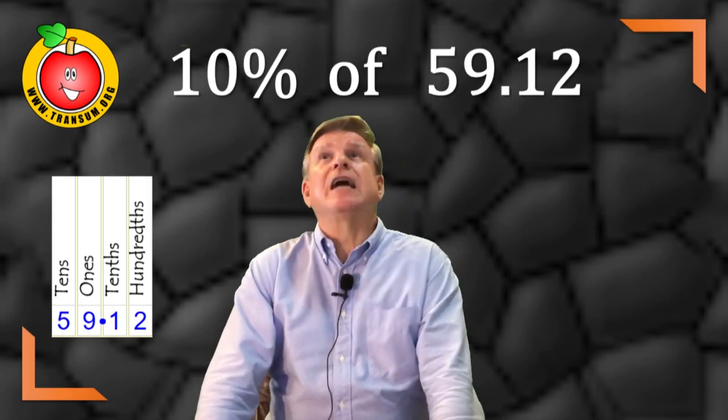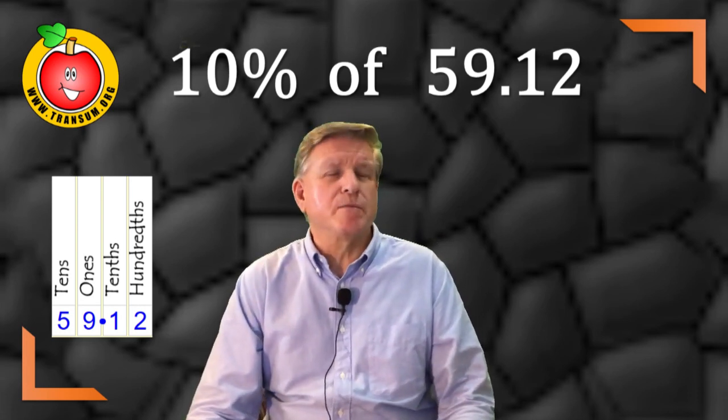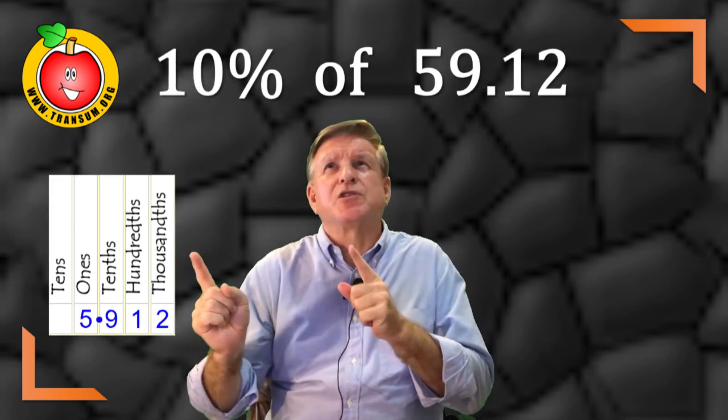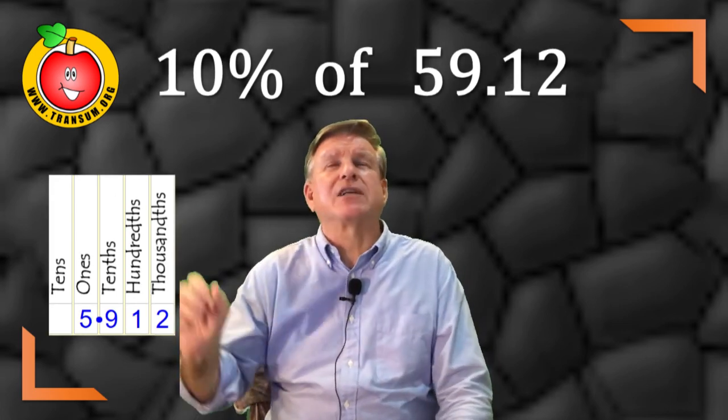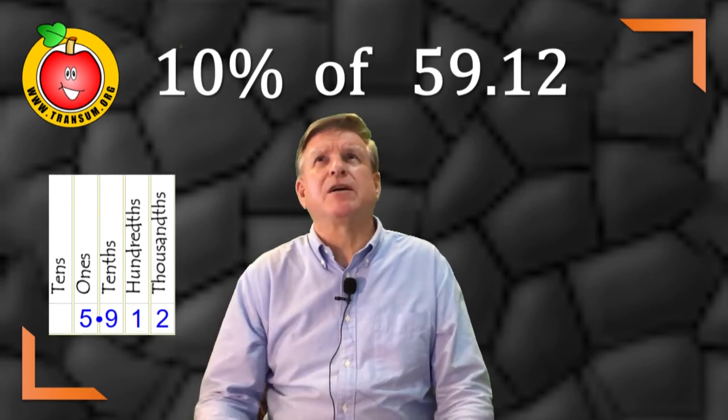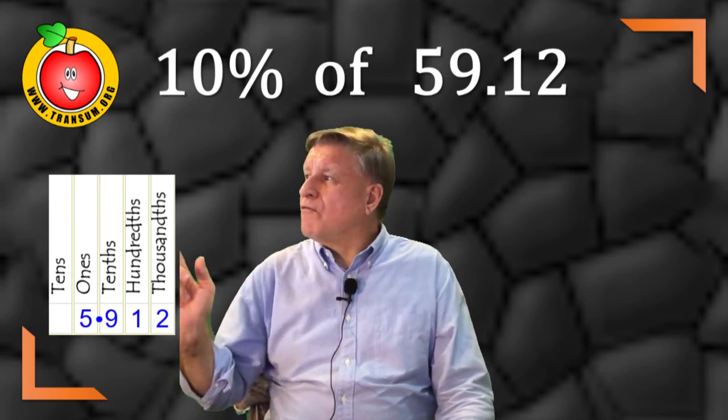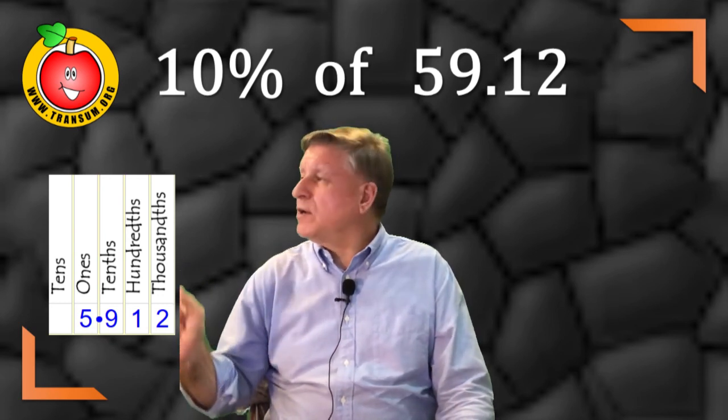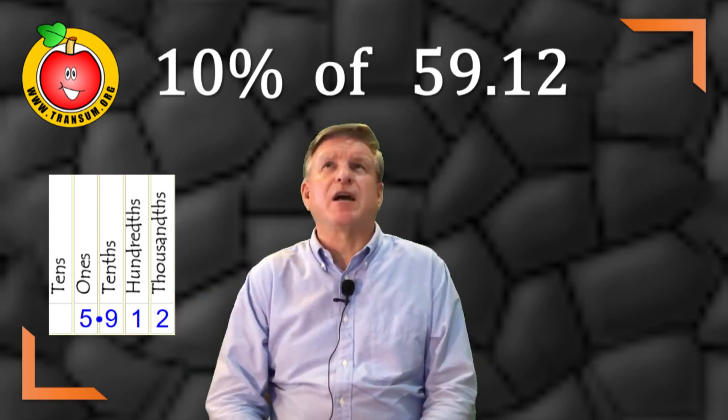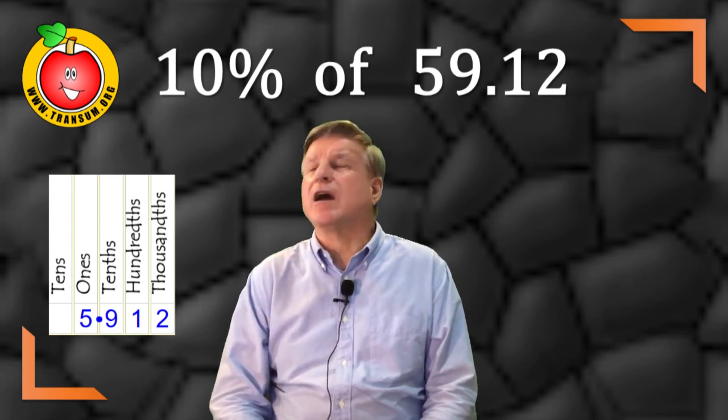Similarly 10% of 59.12 divided by 10, everything sort of switches to the next column. So the five tens become five ones. So that will be 5.912. So 59.12 divided by 10 is 5.912.